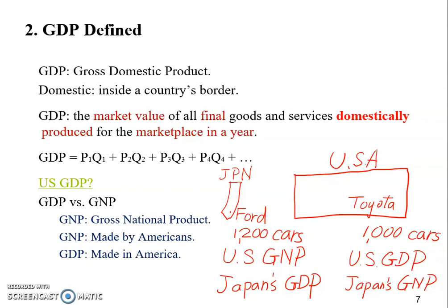Now that we have two measures of output, we want to compare them and figure out which one is a better measure. GDP or GNP? The answer is probably straightforward — if you think about which one you hear more often, it's going to be GDP. You barely hear anyone talking about GNP these days, so GDP is likely the better one.